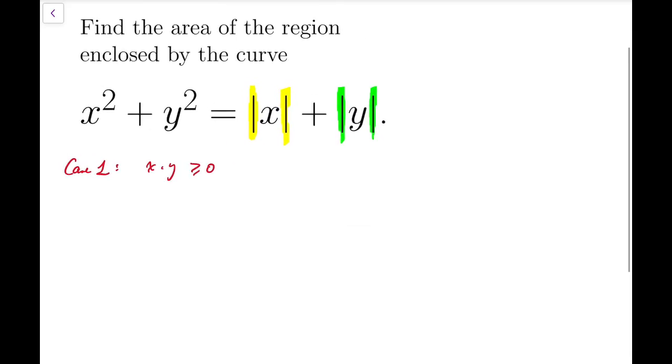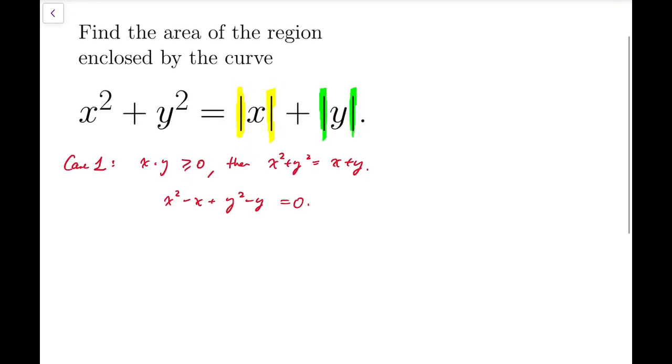And then in this case, we have this. And so x squared minus x plus y squared minus y equals zero. And then I'm going to add a quarter on both sides. The reason that I'm doing this is to complete the square. Which is that this is squared, and this is also squared, perfect squared. So x minus a half whole squared plus y minus a half whole squared equals 1 over 2.